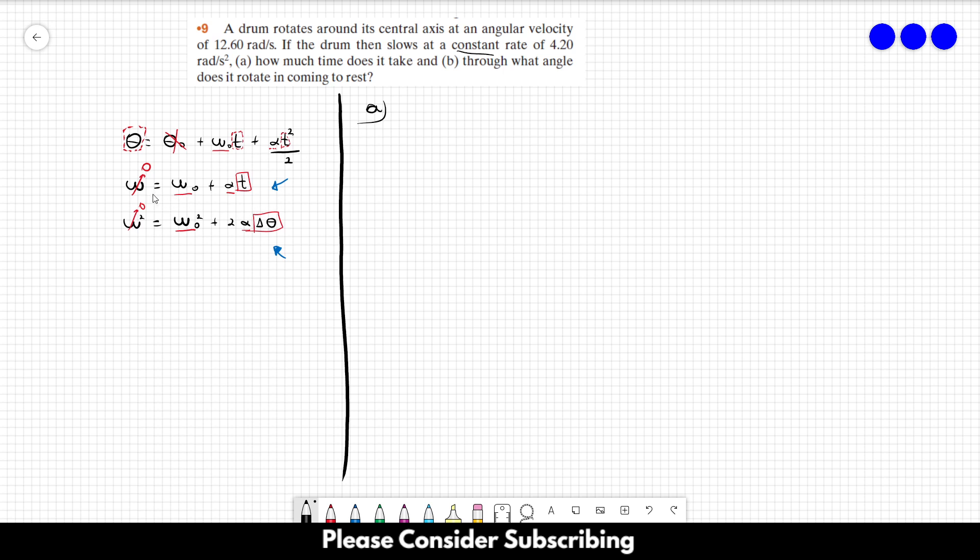Right, so let's use this equation over here. So we have that zero is equal to the initial angular velocity plus alpha t. We want t. So t is going to be minus omega 0 over alpha.